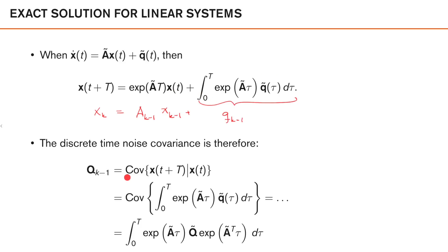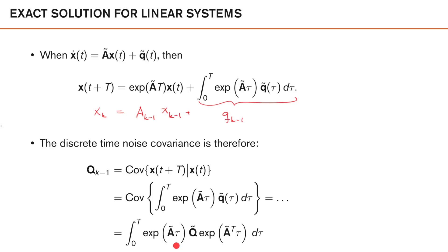This covariance can be expressed as the expectation of the integral times its transpose. By doing a similar trick as before — changing the order of integration and expectation — we get the result: an integral from 0 to T of the matrix exponential e^{Ãτ} times Q̃ times the matrix exponential transpose. We can interpret this as the continuous time noise covariance getting mixed by these matrix functions and integrated over the whole sample interval. In many cases this is not too hard to handle, since the elements of these matrices are often polynomials in τ of quite low order.